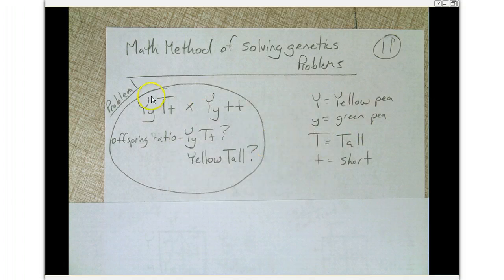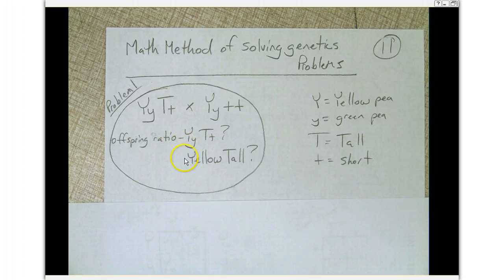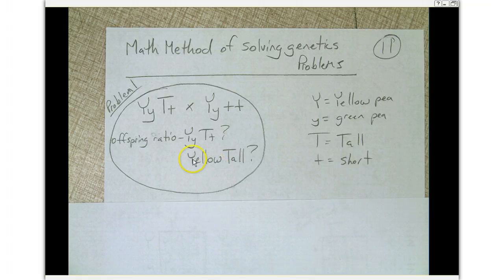Here we have a practice problem: YyTt crossed with Yytt. First thing we want to do is write down our alleles. Big Y is yellow peas, little y is green peas. Big T is tall, little t is short. We're trying to figure out the predicted possibility of producing offspring that are heterozygous for two traits, big Y little y big T little t. And we're also going to figure out how many of the offspring are predicted to be yellow and tall.